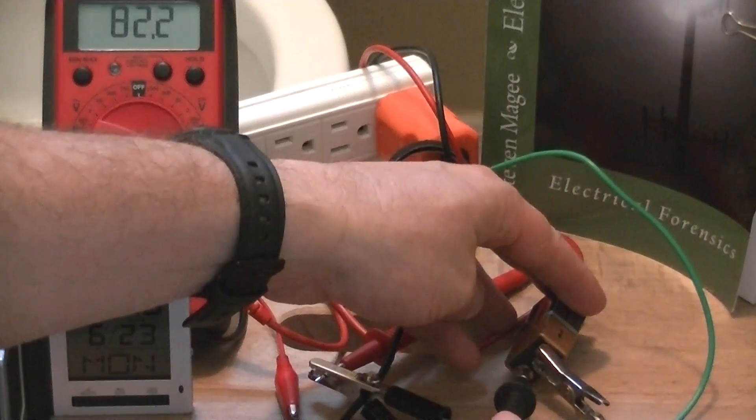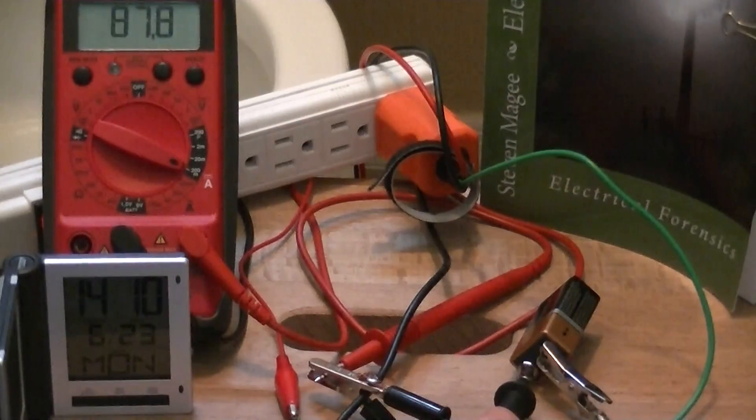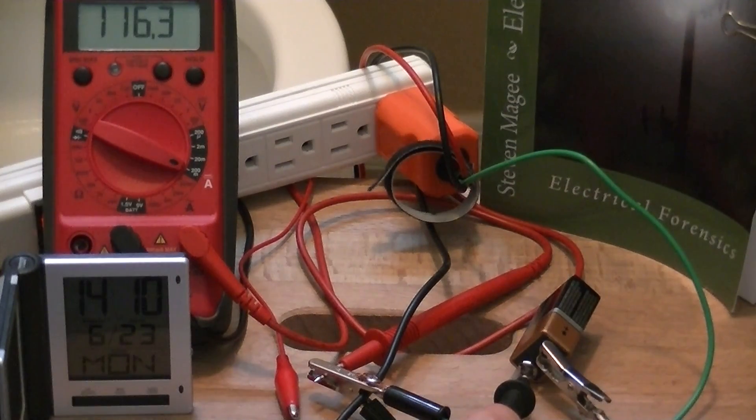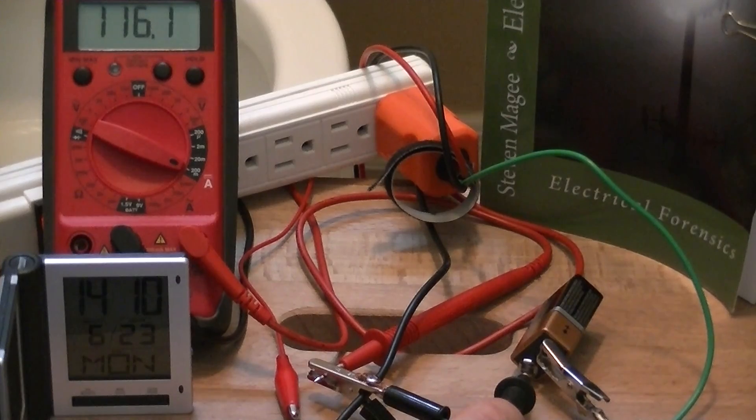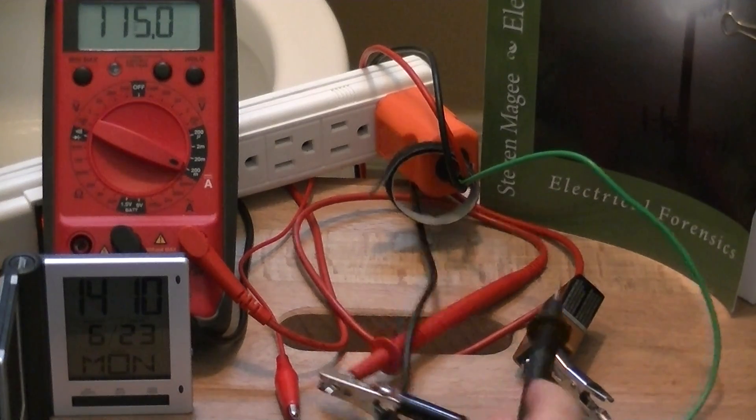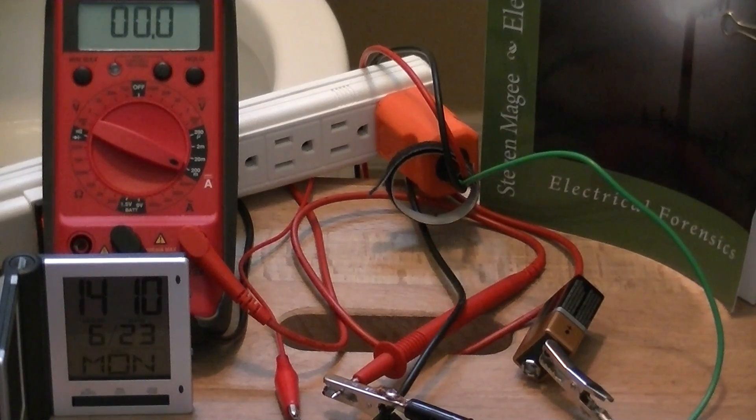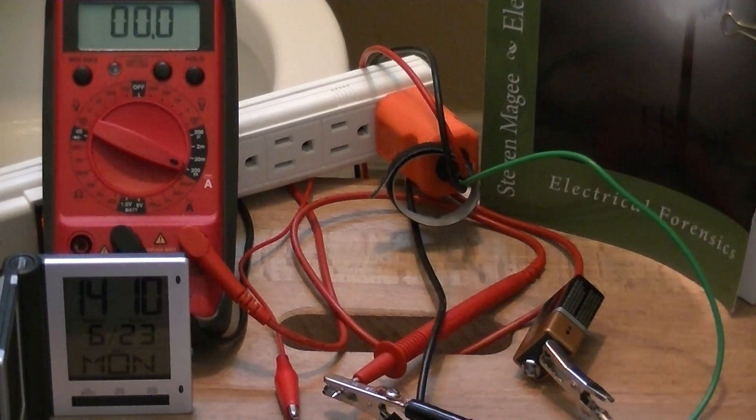And watch the display. You can see that we actually have 116 milliamps flowing between the home electrical grounding system and the non-electrified ground rod in the back garden. That tells us that we have a very good ground connection for doing our measurements.